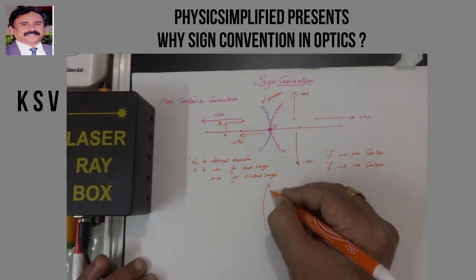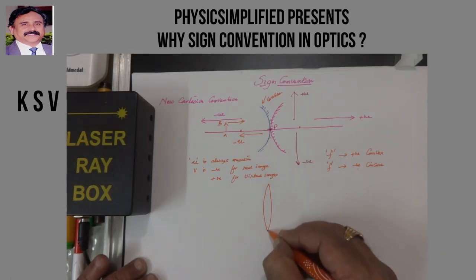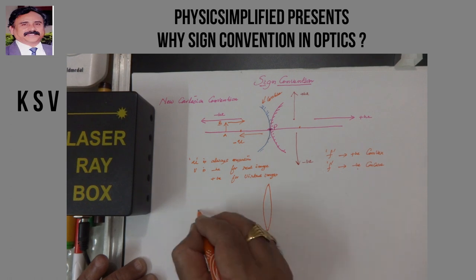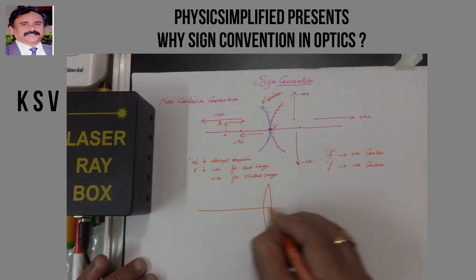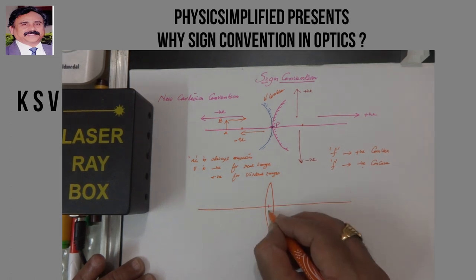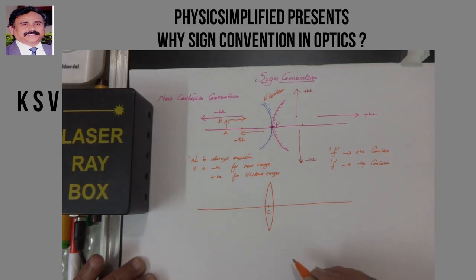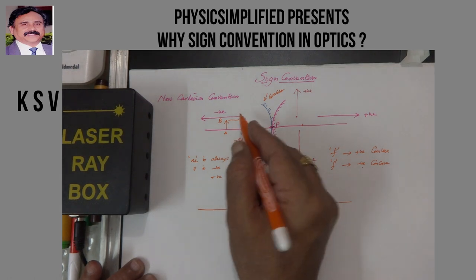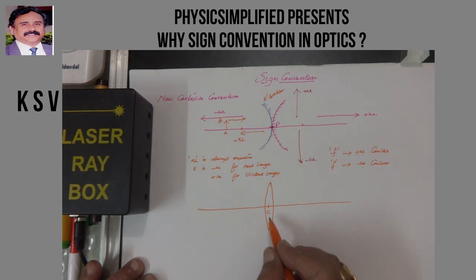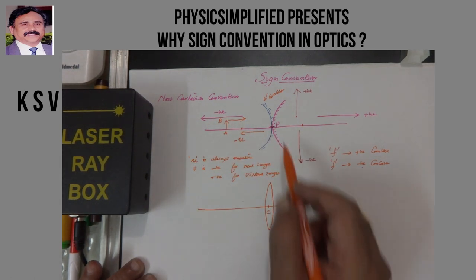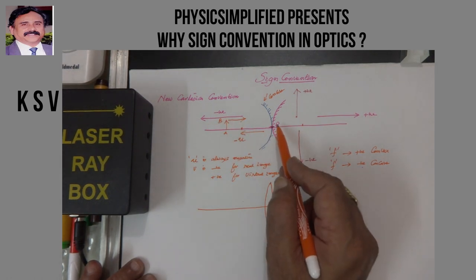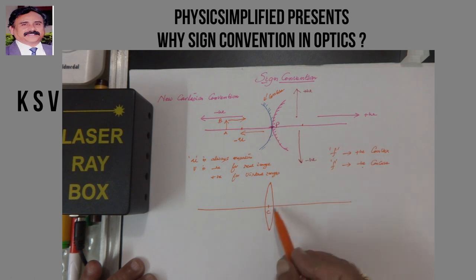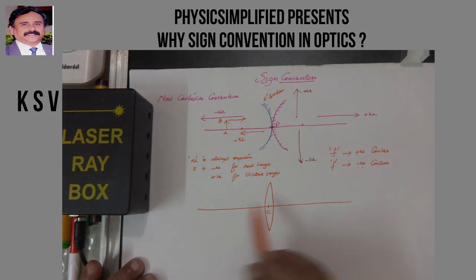In the case of lenses, you have to measure the distances from the optical center. All other rules are the same. The optical center acts as the corresponding reference point in place of the pole.